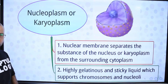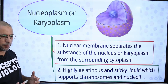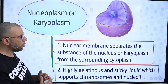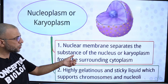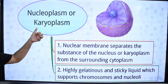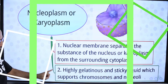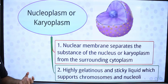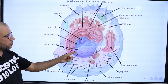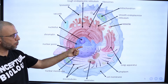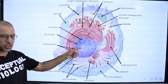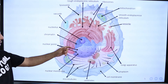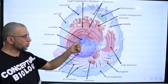What is nucleoplasm or karyoplasm? The nuclear membrane separates the substance of the nucleus from the surrounding cytoplasm; that substance is known as nucleoplasm or karyoplasm. It is a highly gelatinous and sticky liquid which supports chromosomes and nucleoli. The contents present inside the nuclear membrane are called nucleoplasm or karyoplasm, and it contains chromatin and nucleolus.